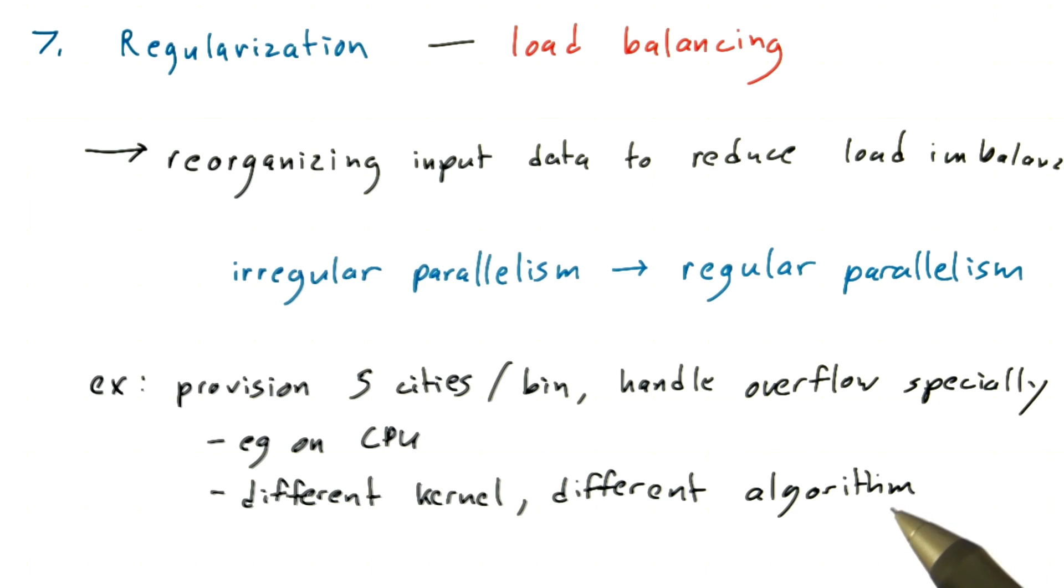is more than made up for by the fact that you never have an entire warp or an entire thread block or an entire kernel waiting on a single thread that has 127 cities to check or 1,000 cities to check. You've regularized the problem.